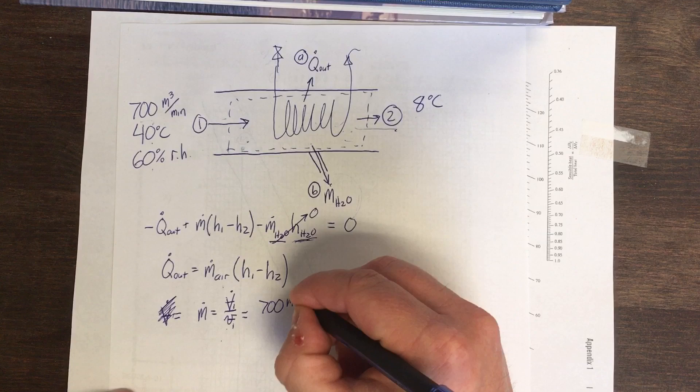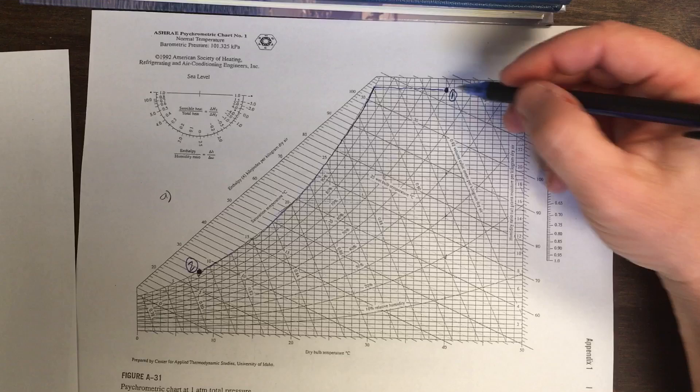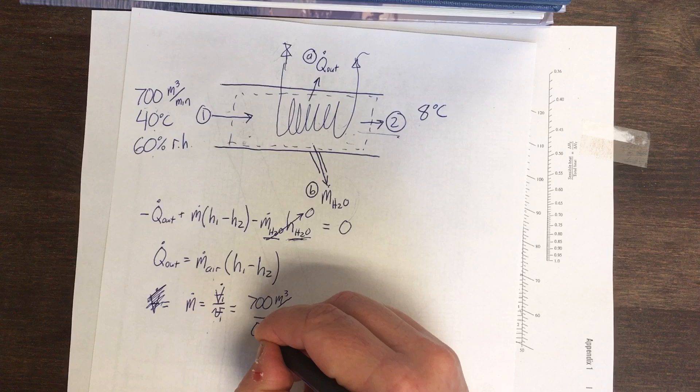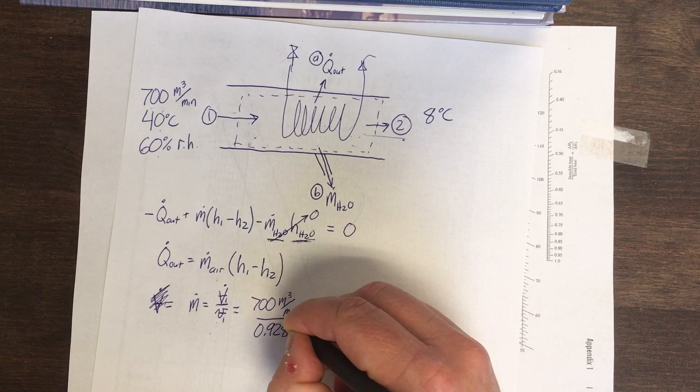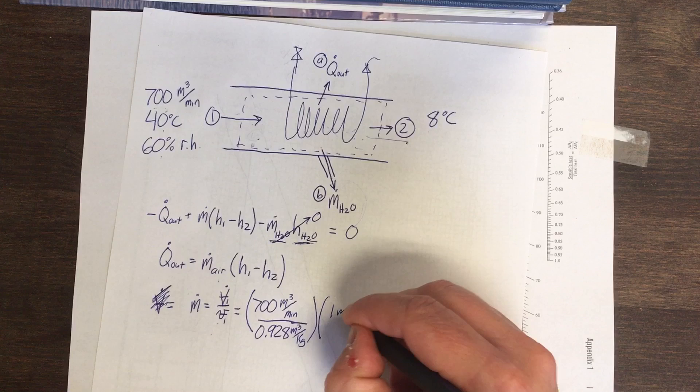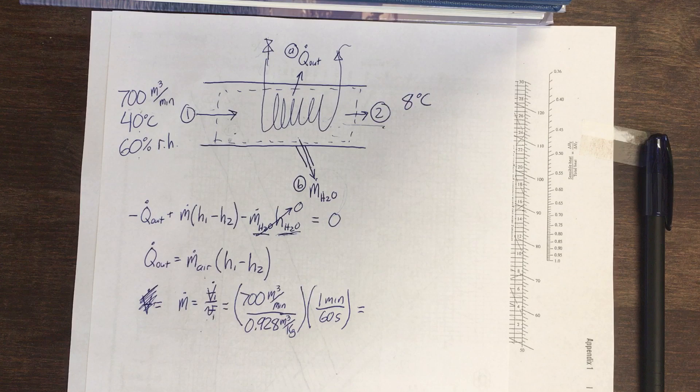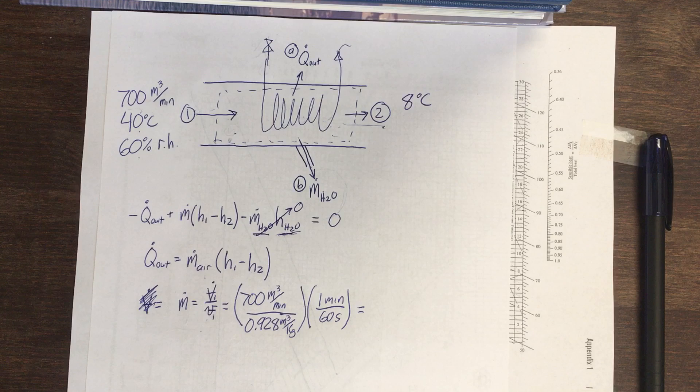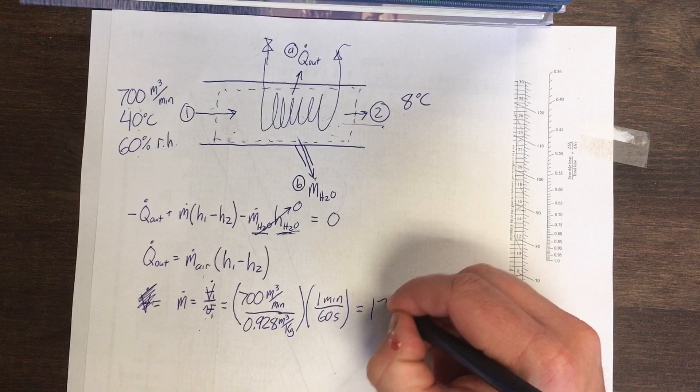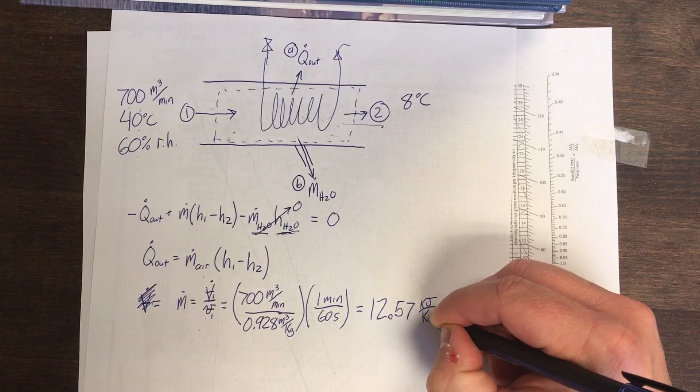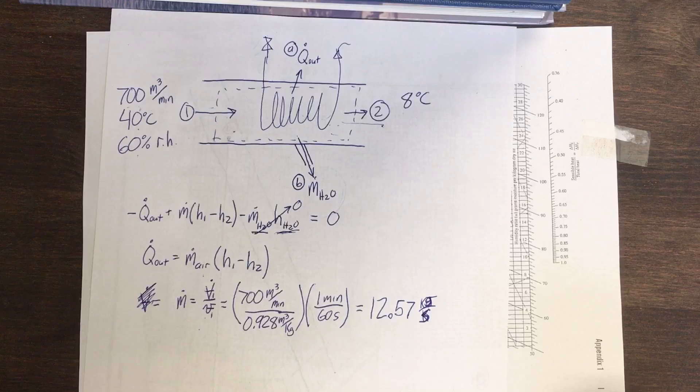Volume flow rate, 700 meters cubed per minute. The specific volume at 1. There's 0.92, 0.94, so that's 0.93. So I'm going to call it 0.928 meters cubed per kilogram. So now I've got kilograms per minute as the units. One minute is 60 seconds. And so let's get this mass flow rate. 12.57, so it went down significantly compared to the previous. 12.57. Let's see, that's kilograms per second.